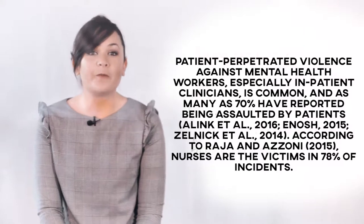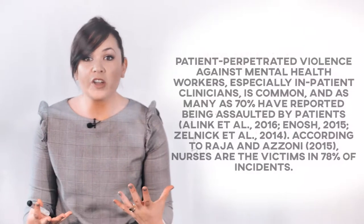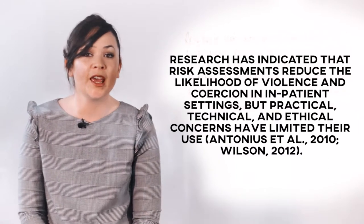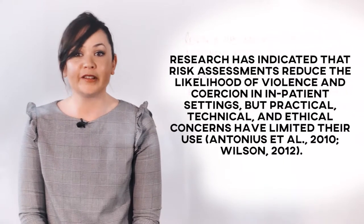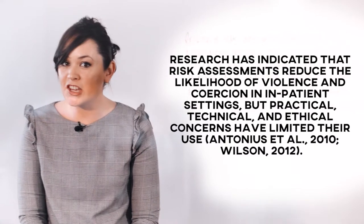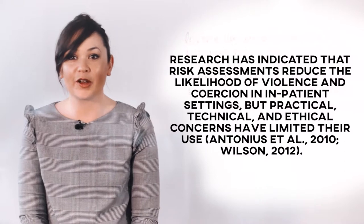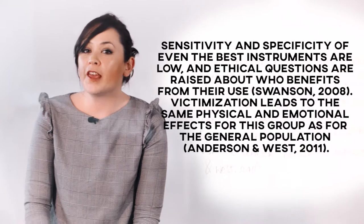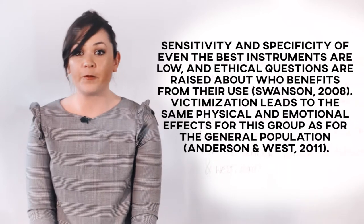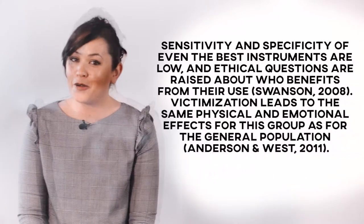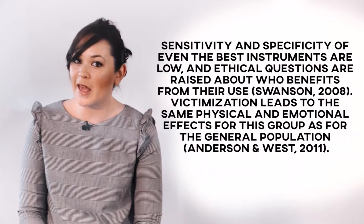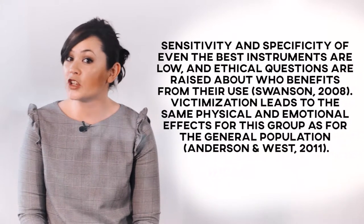Let's review the first portion of the first paragraph of our initial draft, one chunk at a time. This first portion says: 'Research has indicated that risk assessments reduce the likelihood of violence and coercion in inpatient settings, but practical, technical and ethical concerns have limited their use.' This seems to start well — it's not very specific on its own, but it's well supported using three citations. Let's now take a closer look at how the first paragraph ends: 'Sensitivity and specificity of even the best instruments are low and ethical questions are raised about who benefits from their use. Victimization leads to the same physical and emotional effects for this group as for the general population.'